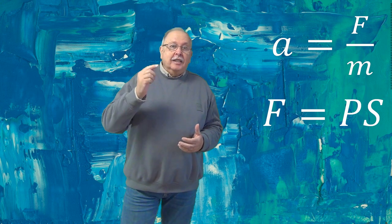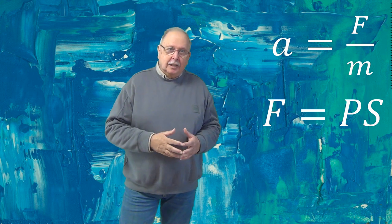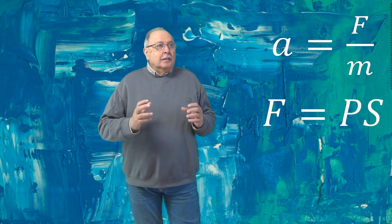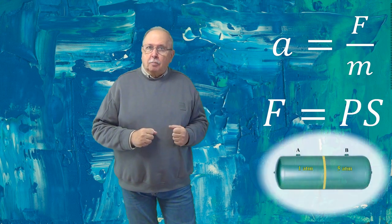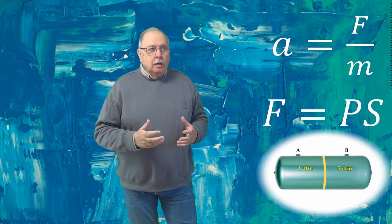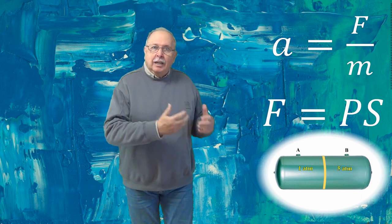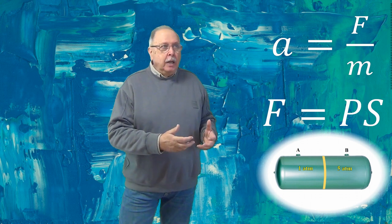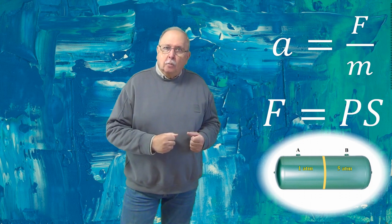Dar și densitatea unui gaz este proporțională cu presiunea. Dacă vreți să știți mai multe despre asta, puteți urmări primele cursuri de termodinamică. Să presupunem pentru simplitate că cele două compartimente au același volum. Atunci, dacă densitatea este proporțională cu presiunea, înseamnă că masa de aer din compartimentul în care presiunea este 5 atmosfere este de 5 ori mai mare decât masa aerului din celălalt compartiment.